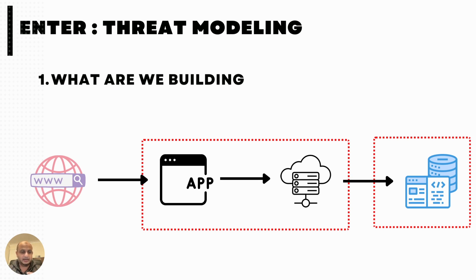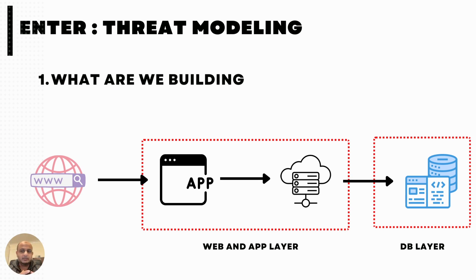So now we've understood we have a web application layer, an application layer, and a database layer. These boundaries are called trust boundaries, and you should draw them wherever different people control different things, or different systems control different things. These can be when you have sensitive accounts, network changes, different physical computers, different subnets — basically anywhere where privileges are changing.